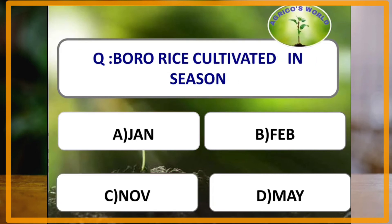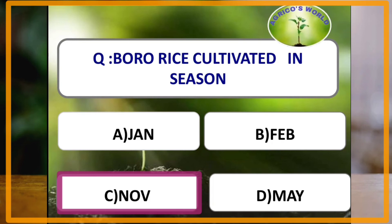Boro rice is cultivated in which season? According to seasons, three types of rice are cultivated: Aus, Aman, and Boro. Aus rice is cultivated in April and May; Aman is cultivated in June and July; and Boro rice is cultivated in November to December. The answer is November.